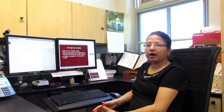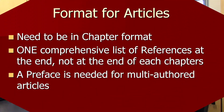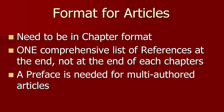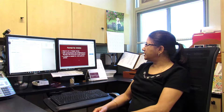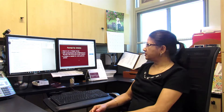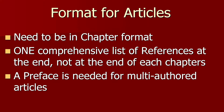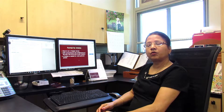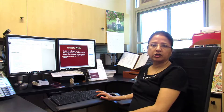If you are using articles in your thesis or dissertation, keep in mind that they need to be in chapter format, and there should be one comprehensive list of references at the very end. You cannot have a list of references at the end of each chapter. A preface is needed for multi-authored articles to explain what part of the work was done by you, the author, and what part was done by other authors — along with journal references.